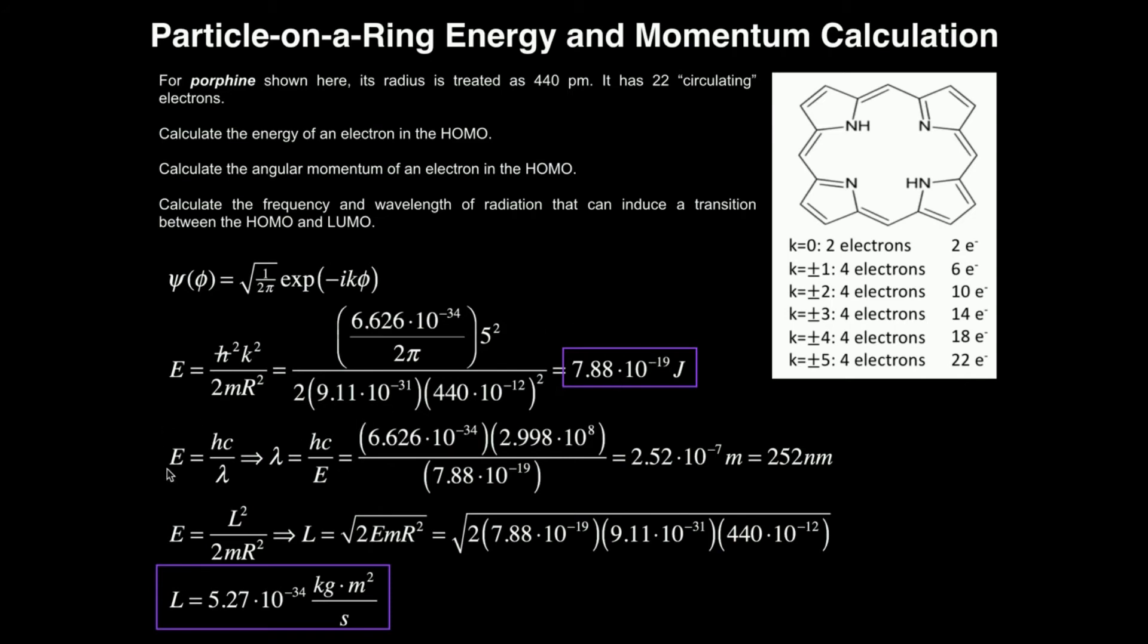Now remember, we can always use this equation back from general chemistry. The energy is equal to Planck's constant times the speed of light divided by the wavelength. We can use this. But we're looking for the wavelength of light, so let's solve for wavelength. So wavelength is equal to Planck's constant times the speed of light divided by the energy.